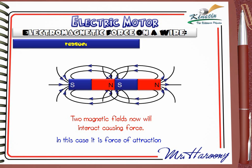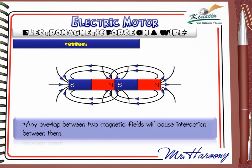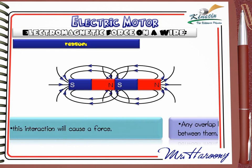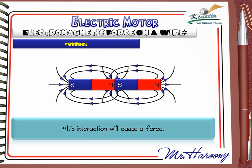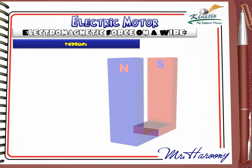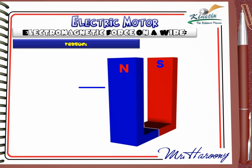From this experiment we can conclude that any overlap between two magnetic fields will cause interaction between them, and this interaction will cause a force. Going back to our case: we have two poles of a magnet and a wire. There is a natural magnetic field between the poles. When current flows in the wire, this generates a magnetic field.